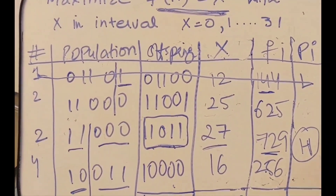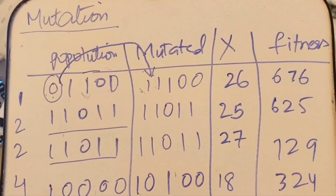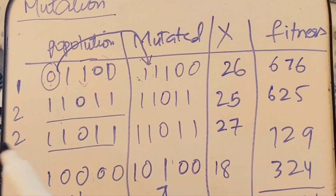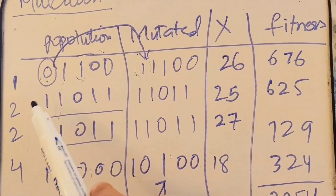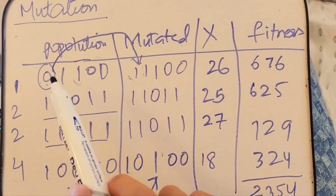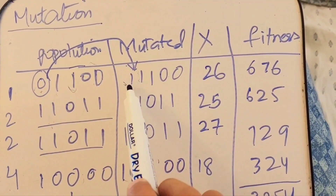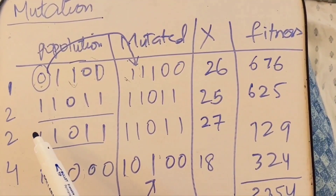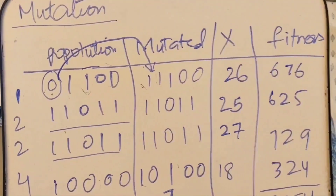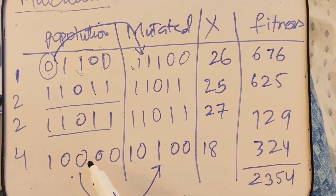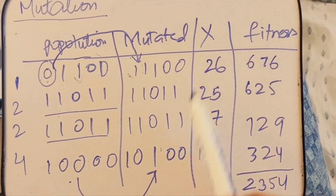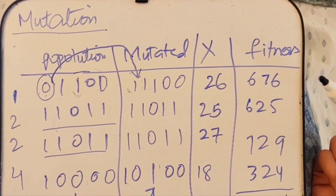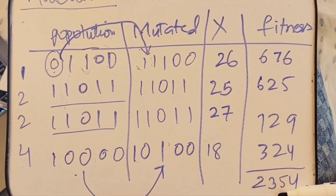To demonstrate mutation, I select the good strings from the last population — repeating the second string twice since it has the highest probability. In mutation, I randomly choose one bit of the first string and flip it: a zero becomes one, while the rest of the string remains the same. The second string with the highest probability is left unchanged. In the fourth string, I randomly pick a different bit to switch.